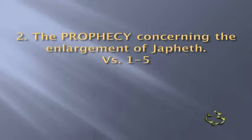What is that reason? We'll see it in a New Testament sermon by the Apostle Paul. Secondly, there's a prophecy concerning the enlargement of Japheth in verses 1 to 5. The sons of Japheth were Gomer, Magog, Madai, Javan, Tubal, Meshech, and Teras. The sons of Gomer were Ashkenaz, Riphath, and Togarmah. The sons of Javan were Elisha, Tarshish, Kittim, and Dodanim. From these, the coastland peoples of the Gentiles were separated into their lands, everyone according to his language, according to their families, into the nations.